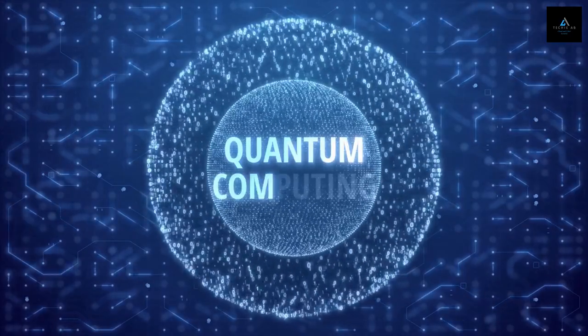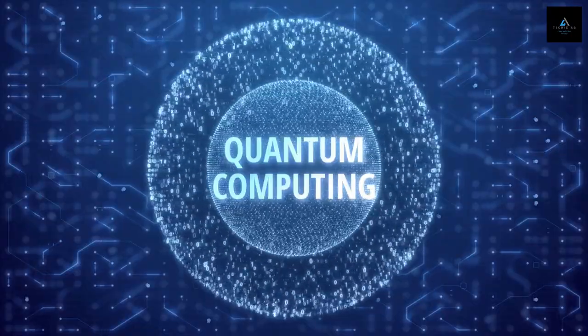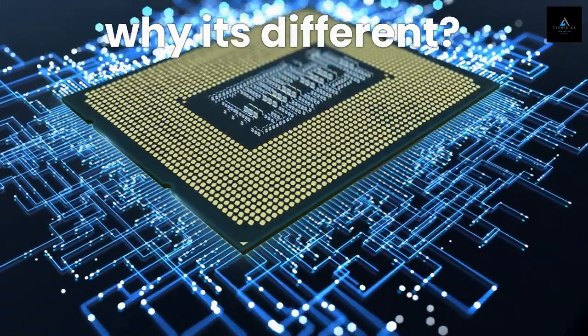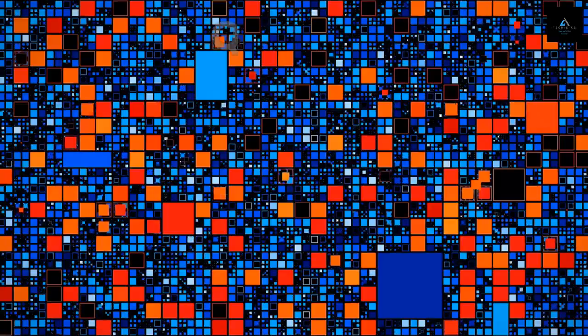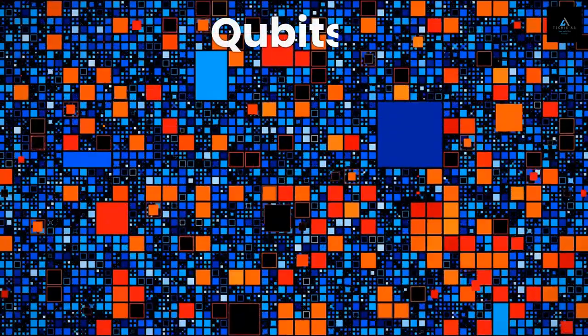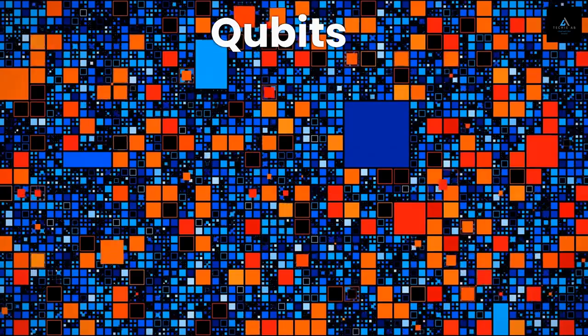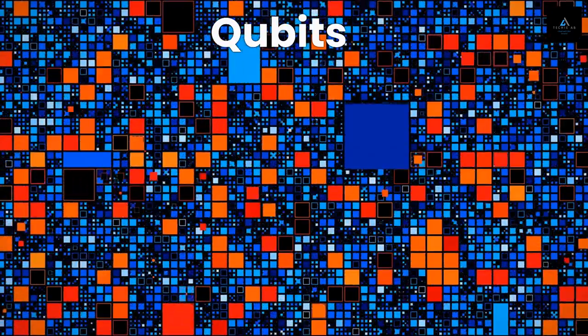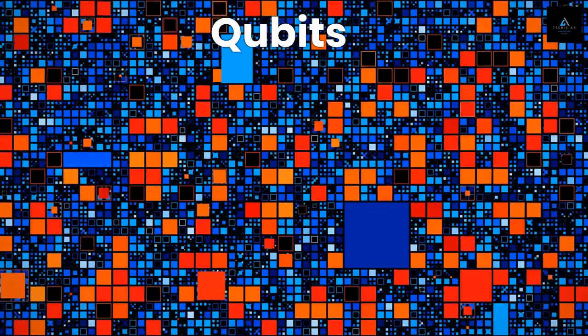Today we'll be exploring the exciting world of quantum computing. We will also discuss what makes it so different from the classical computers that we use every day. Classical computers use bits, which can be either a zero or a one. However, quantum computers use qubits, which can be both zero and one at the same time thanks to a phenomenon called superposition.